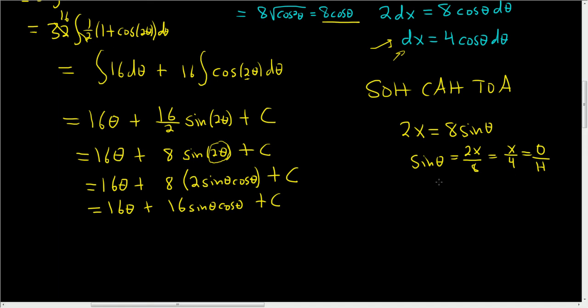So now we can draw a triangle. And the steps are the same for all of the trig substitution problems. So this is theta. So opposite here looks to be like it's x. And hypotenuse is 4. And if you work this out, if you call this B,